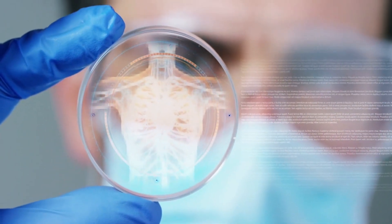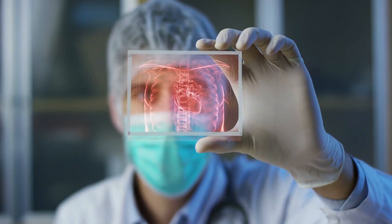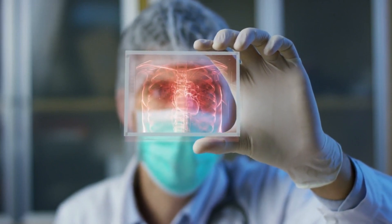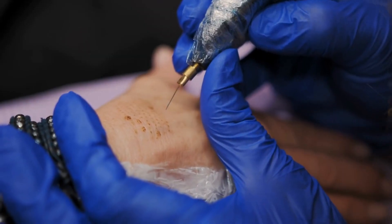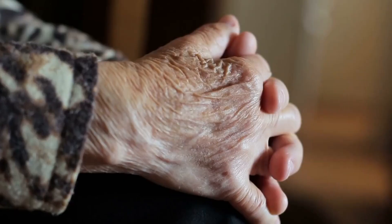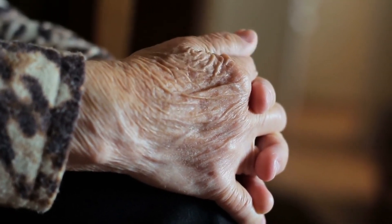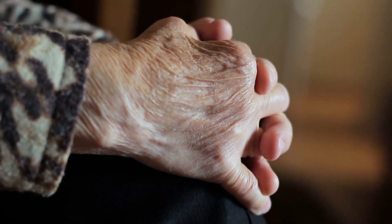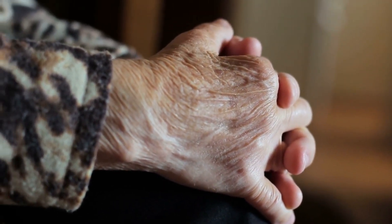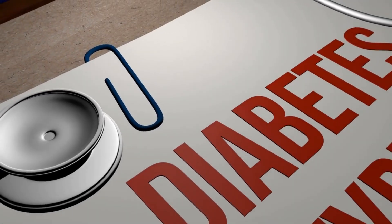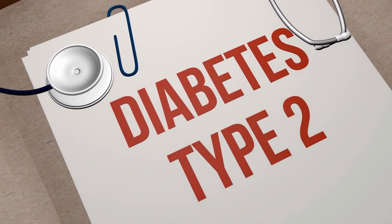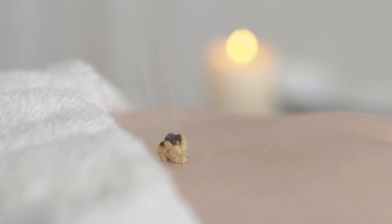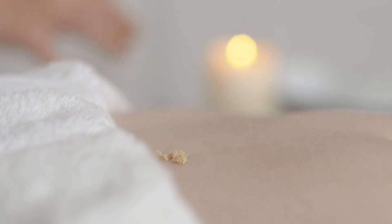Polycystic Ovary Syndrome (PCOS) is a hormonal disorder characterized by the presence of multiple small cysts on the ovaries. It is a common condition affecting women of reproductive age. In addition to ovarian cysts, PCOS is associated with symptoms such as irregular menstrual cycles, excess hair growth, acne, and weight gain. PCOS can also cause fertility issues and an increased risk of developing conditions like type 2 diabetes and cardiovascular disease. Treatment for PCOS focuses on managing symptoms and may involve lifestyle modifications, hormonal therapy, and fertility treatments.